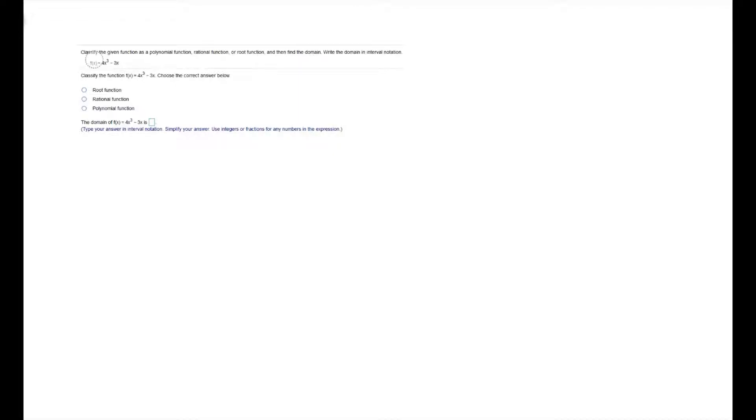The next question says classify the given function as a polynomial function, a rational function, or a root function. Then find the domain. Write the domain in interval notation. So our function is f(x) = 4x³ - 3x.